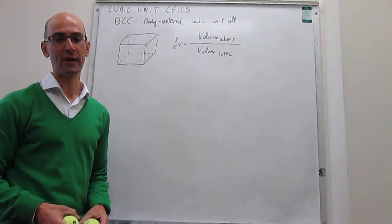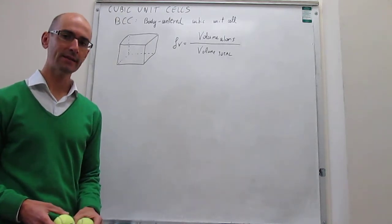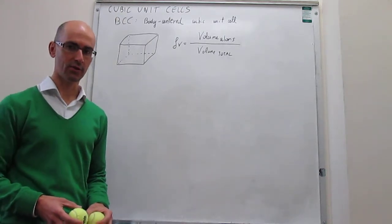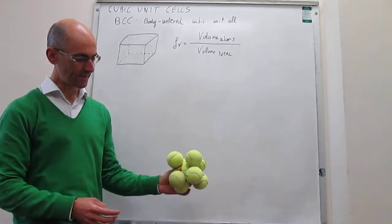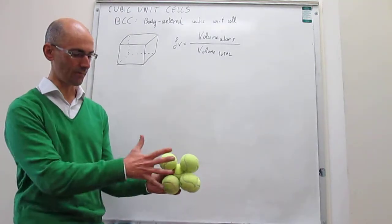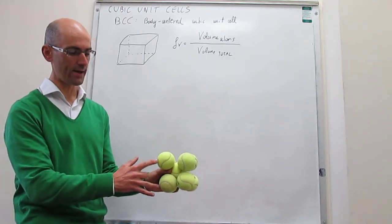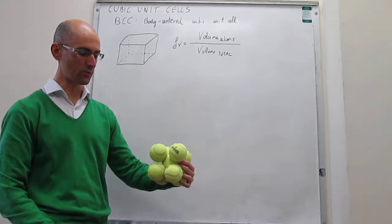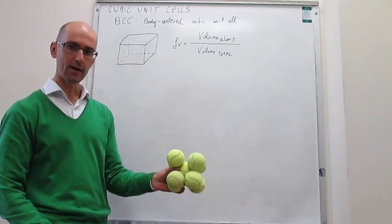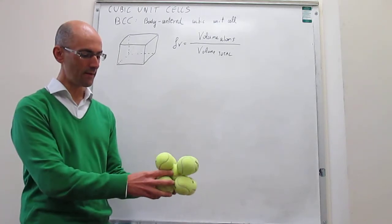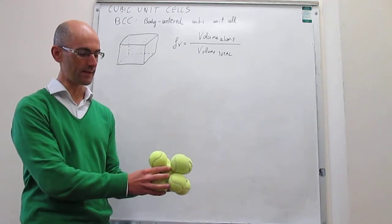In this video, we're going to calculate the packing efficiency of a body-centered cubic unit cell. This is a body-centered cubic unit cell — a cubic unit cell which has one atom, or one sphere, in each one of the eight corners, and then the unit cell is completed by a sphere right in the middle of the unit cell.